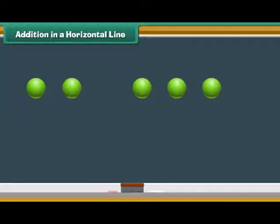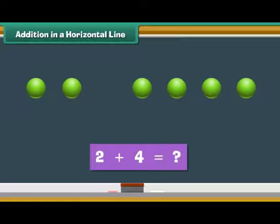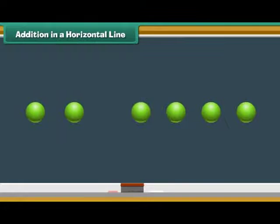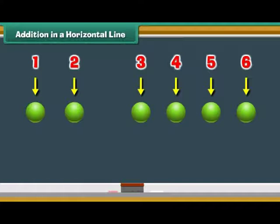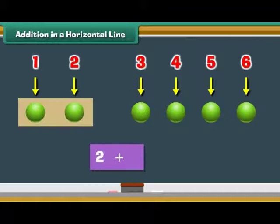Addition in a horizontal line. Let us now use dots to add numbers horizontally. Look at the screen. There are two dots on the left and four dots on the right. What is two plus four? Count the total number of dots: one, two, three, four, five, six. Therefore, two plus four is six.